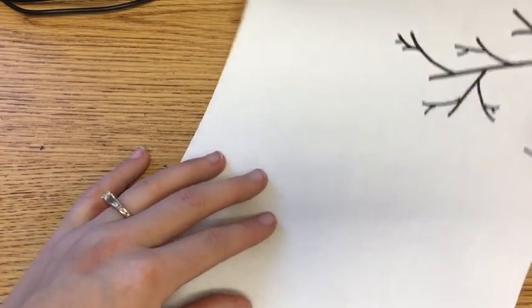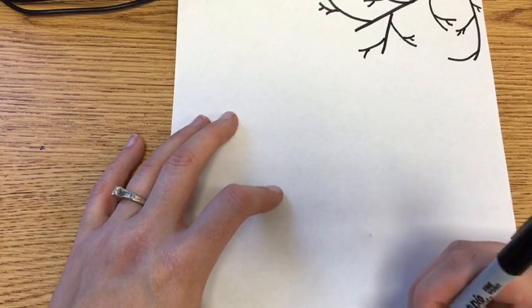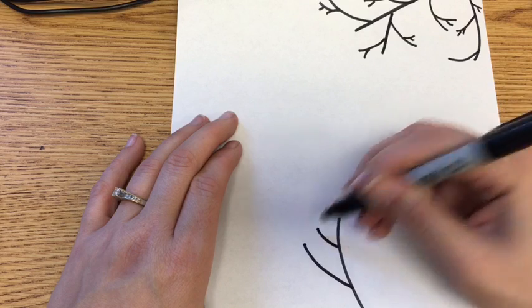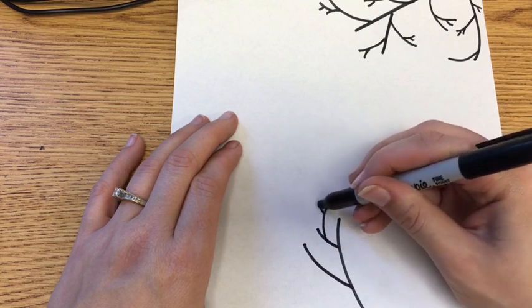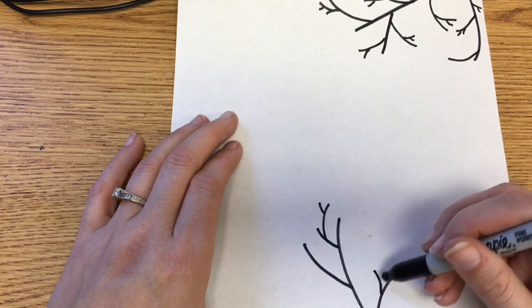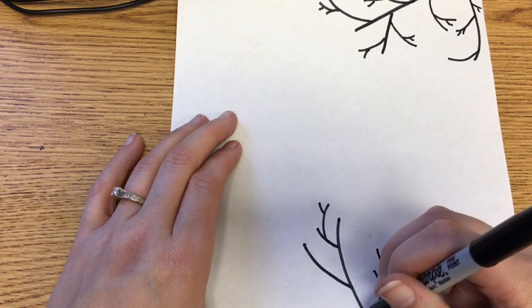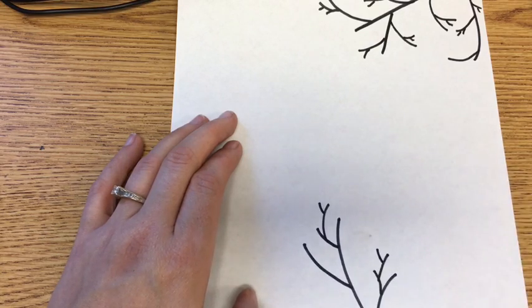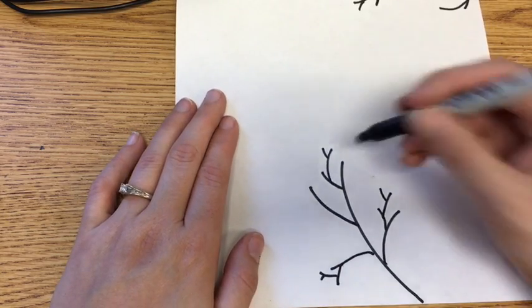So let's rotate our paper so we can have one on each corner of our paper. All right, turn that into a Y there, a little Y here. So notice the closer you get to the end of the tree branch, the smaller your little Y is going to be.